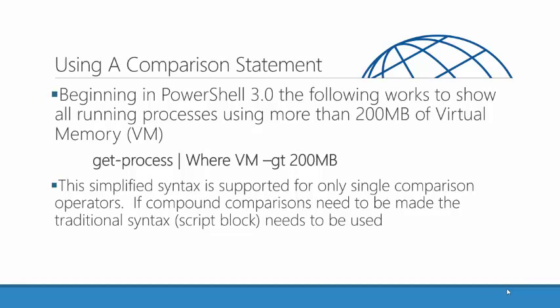The simplified syntax does have a couple of drawbacks. If you need to do any kind of compound comparison — for instance, if I wanted to find processes where the virtual memory was greater than 200 megabytes and their CPU usage was greater than a certain amount — I couldn't use the simplified syntax for that. Any kind of compound comparison using an AND, an OR, or a NOT, when you're examining multiple properties, you've got to use the -Filter parameter or the script block in order to do that. This really is just for simple comparisons, and that's why I call this the simple syntax.